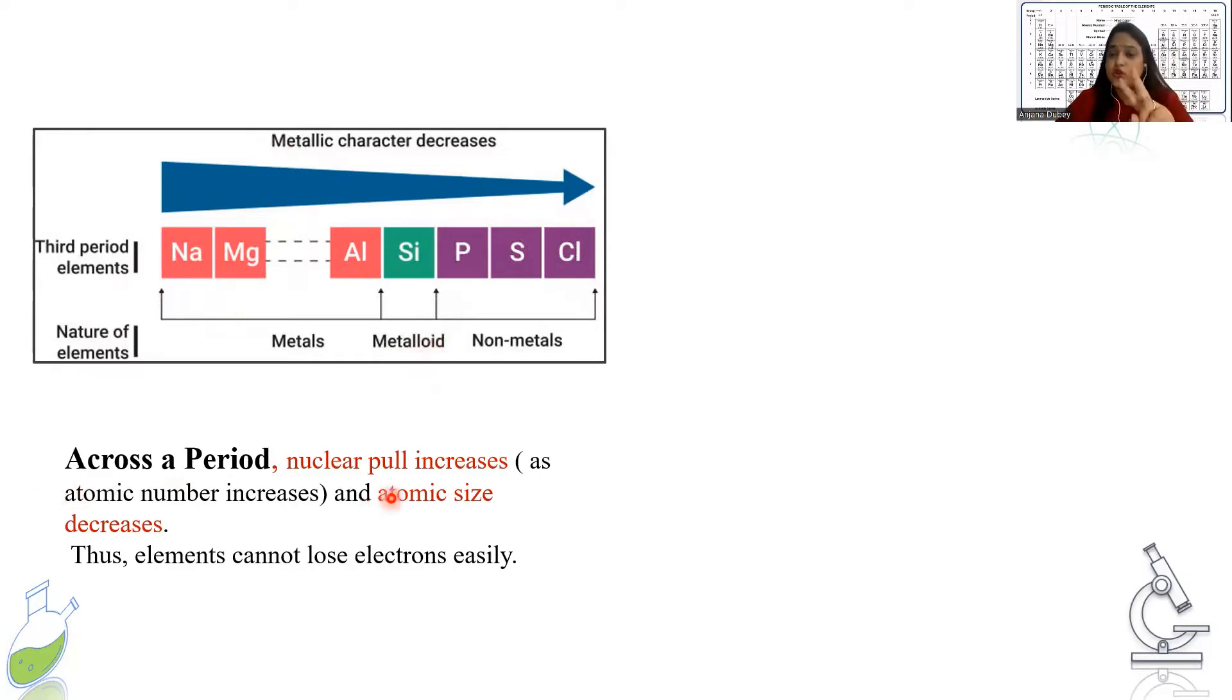Here, I have taken the elements of the third period. Yeh third period ke elements hai. Sodium, magnesium, aluminium, silicon, phosphorus, sulfur and chlorine. So what is happening here? Yeh toh tumhara period hai. Third period hai. Third period mein jaise tum sodium se chlorine ki taraf badh rahe ho, kya ho rahi hai? Size ho rahi hai choti. Size is getting smaller. So what are you seeing? Metallic character is decreasing. We all know chlorine is a non-metal. We all know sulfur is a non-metal. Chlorine or sulfur non-metal ki tarah behave kar rahe hai. Iske size itni choti hai ki it is not able to give out electron. Nucleus strongly electrons ko pakad ke rakh raha hai.